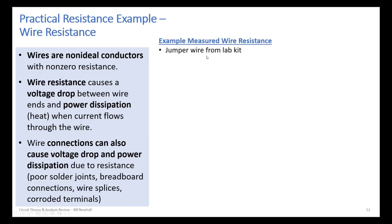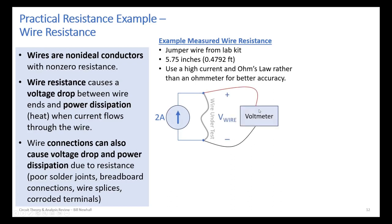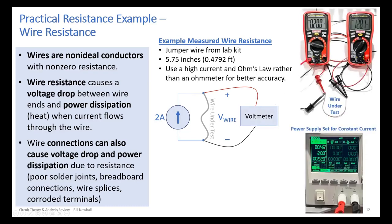Here's an example of measured wire resistance. For a jumper wire from your lab kit — end to end, 5.75 inches — I used a high current source and Ohm's law rather than an ohmmeter to get better accuracy, because the resistance was expected to be small over that short length. I connected a 2-amp source and measured the voltage with a voltmeter to get the voltage across the wire. Two multimeters show 2 amps of current and 128 millivolts across the wire.